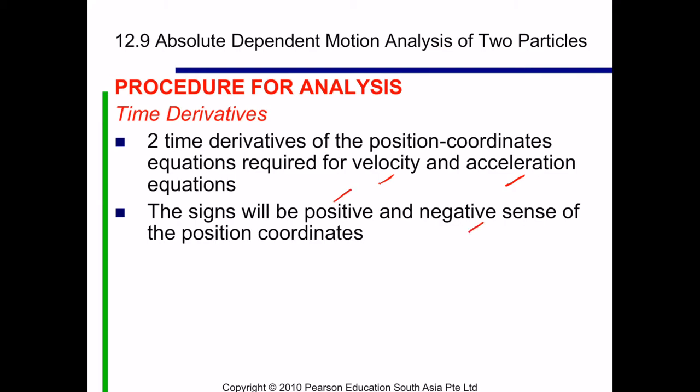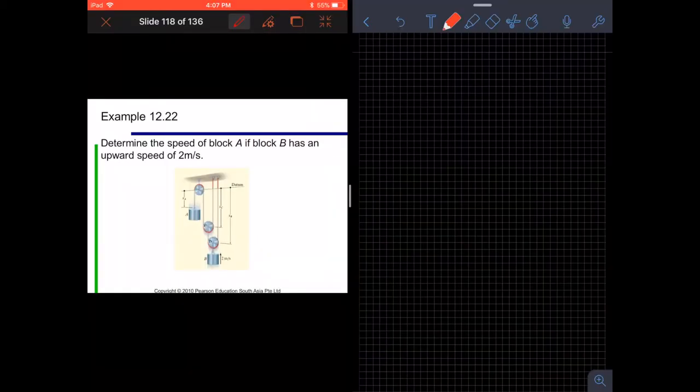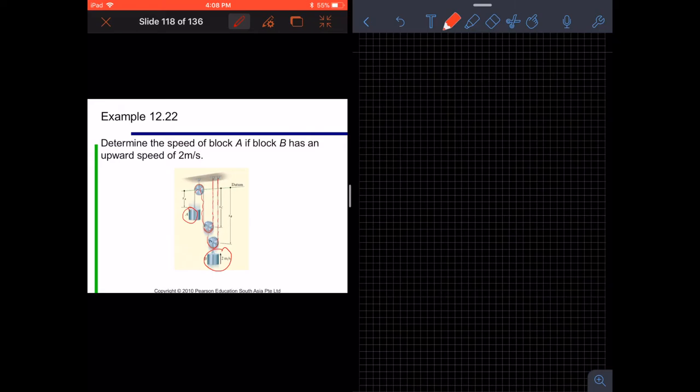Let's look into example 12.22. We need to determine the speed of block A if block B has an upward speed of 2m per second. In this particular problem, we are given 2 cords. So this is one cord, and this is another cord. So here we have SA and SB. This is SA, this is SB, and this is SC. SC is used to relate between SB and SA. And the red part is not to be considered because it doesn't change with respect to time. So we have 2 total cords which is L1 and L2.